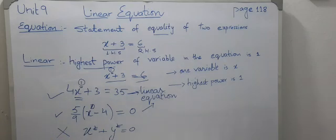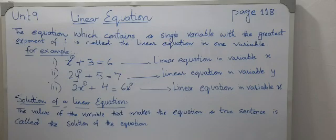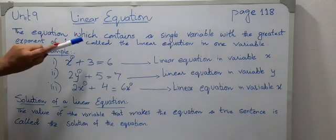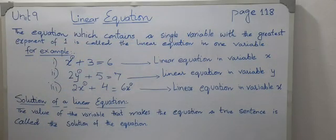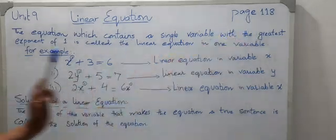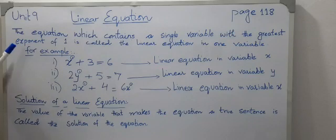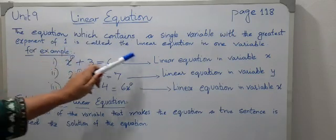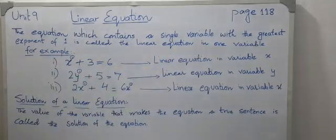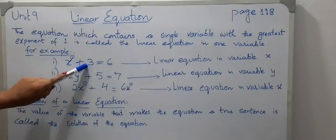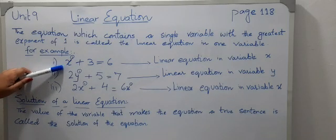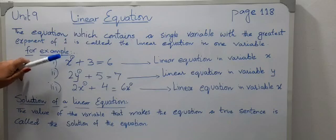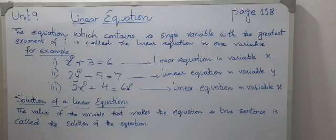In a linear equation, the equation contains a single variable with the greatest exponent of 1. This is called the linear equation in one variable. For example, x plus 3 equals 6 — variable is x, one variable, and highest power is 1, so this is a linear equation in variable x.